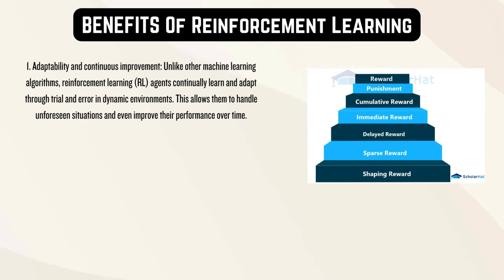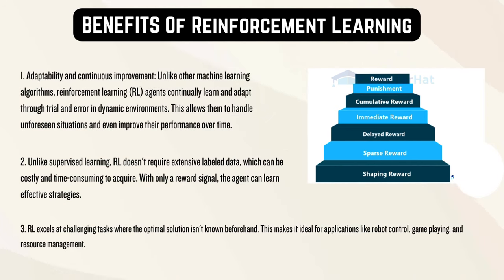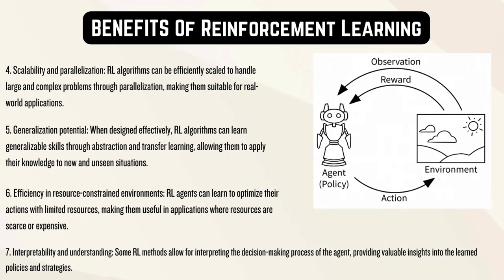Number one, reinforcement learning (RL): agents continually learn and adapt through trial and error in dynamic environments. This allows them to handle unforeseen situations and even improve their performance over time. Number two, unlike supervised learning, RL doesn't require extensive labeled data, which can be costly and time-consuming to acquire. With only a reward signal, the agent can learn effective strategies. Number three, RL excels at challenging tasks where the optimal solution is unknown beforehand. This makes it ideal for applications like robot control, game playing, and resource management. Number four can be efficiently scaled to handle large and complex problems for parallelization. Number five can learn generalizable skills for abstraction and transfer learning. Number six, reinforcement learning agents can learn to optimize their actions with limited resources. Number seven, some RL methods allow for interpreting the decision-making process of the agent, providing valuable insights into the learned policies and strategies.